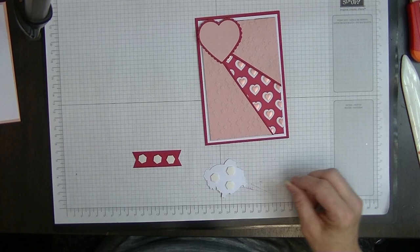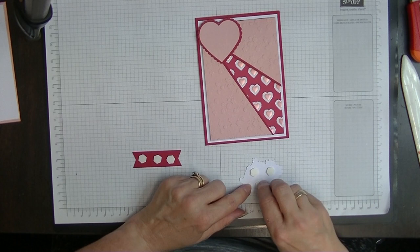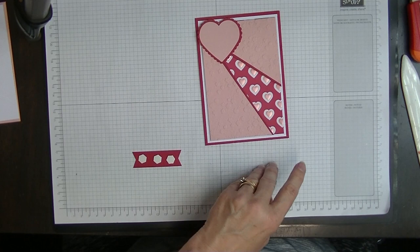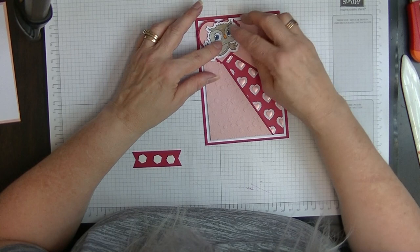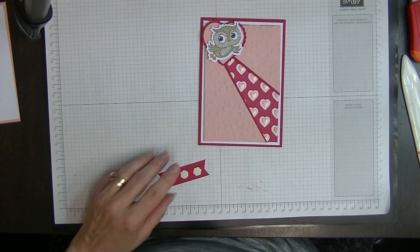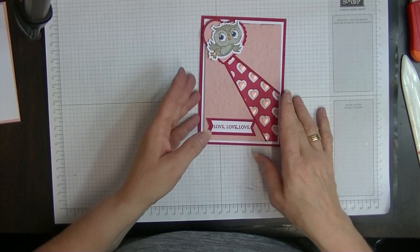The glue is drying so quickly. We're going to pop some more dimensionals onto these. Pop a couple on the back of the love, and on the back of my little owl that I've cut out. No, I didn't cut him out by hand, I did use my scan and cut. That's why it's even all the way around. I'm popping him on here like that, and he looks so cute.